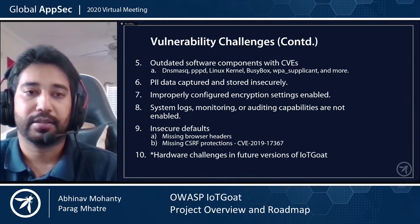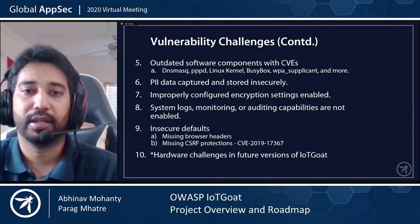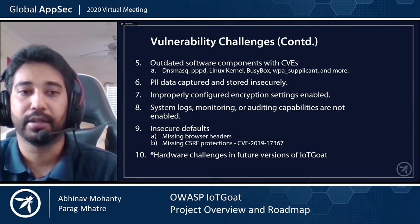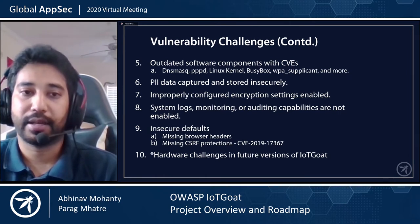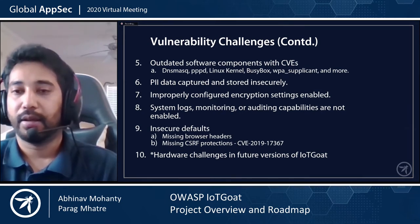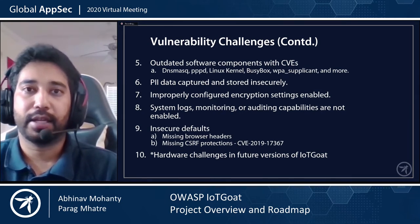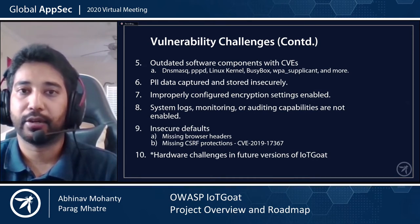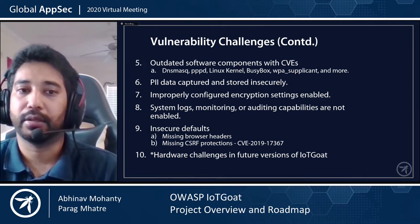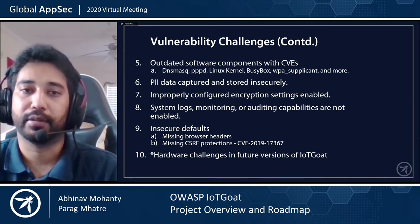Device management capabilities such as system logging, monitoring, and auditing have also been disabled. Browser headers that prevent framing have been removed in certain places and these can be combined with missing CSRF protections to launch disastrous cyber attacks. One example is that a hacker could inject arbitrary firewall rules and take over your entire router. For future versions of IoT Goat, we also plan to include hardware challenges and open boot vulnerabilities as well.